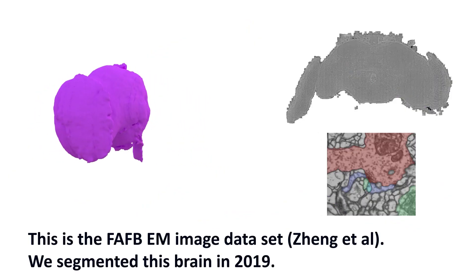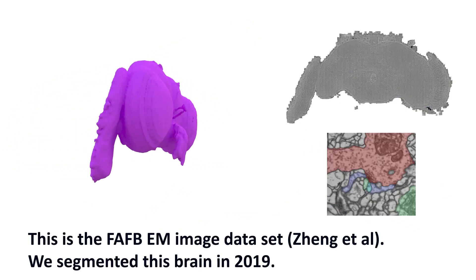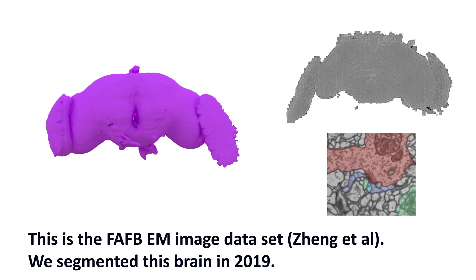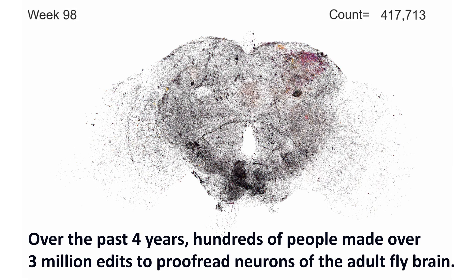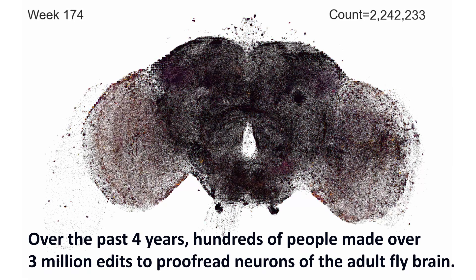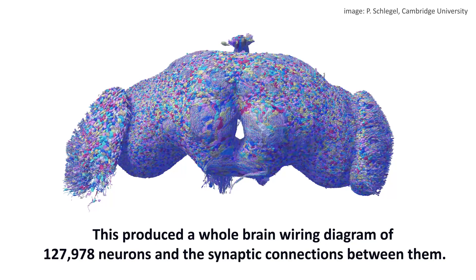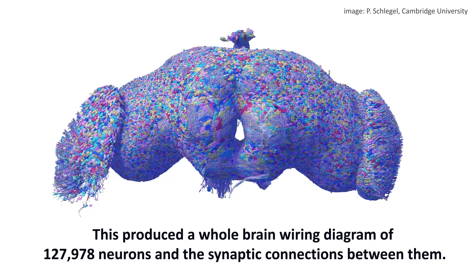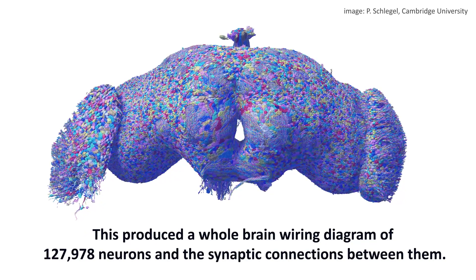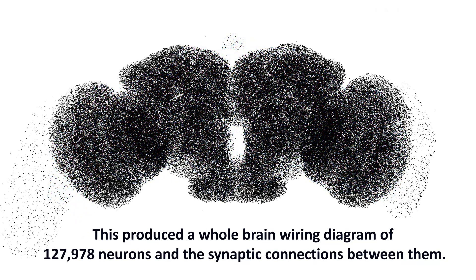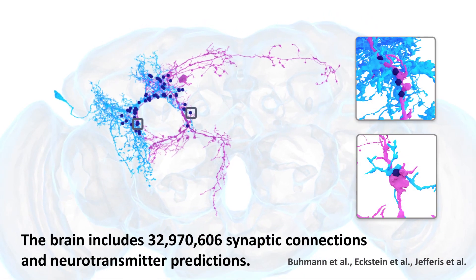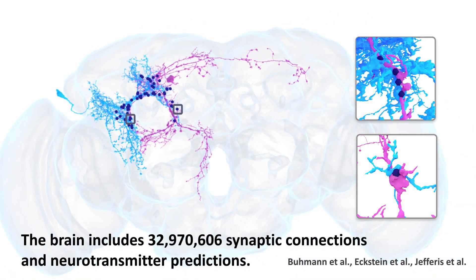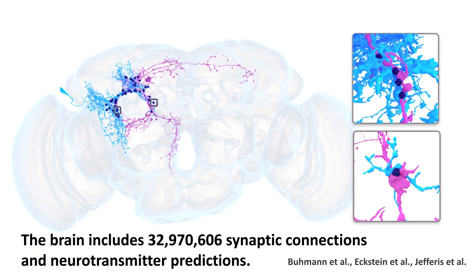This is the full adult female fly brain. It was segmented by our group at Princeton, and over the past four years, hundreds of people from around the world made almost 3 million edits to proofread 127,000 neurons. The connection graph is also available, with 32 million synaptic connections as well as neurotransmitter predictions.